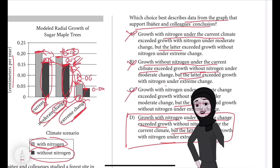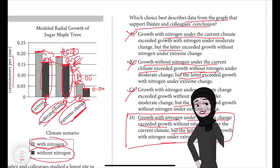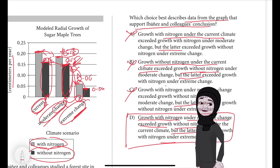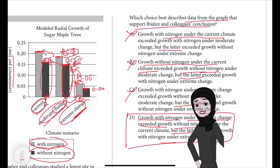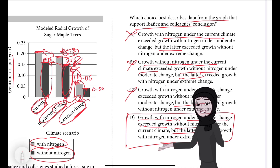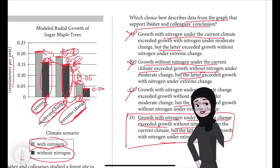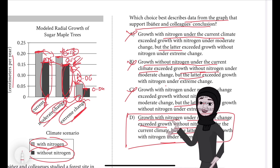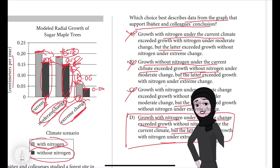Choice C is also incorrect. It accurately represents data in the graph, but this fact pattern doesn't support Ebanes and colleagues' conclusion that the decline in radial growth due to climate change will be partly offset by higher nitrogen levels — but only if change is moderate, not extreme. Choice C mentions only growth with and without nitrogen under moderate climate change and growth without nitrogen under extreme change, which don't provide a basis to determine whether higher nitrogen in the future will be able to offset reduced growth due to climate change.